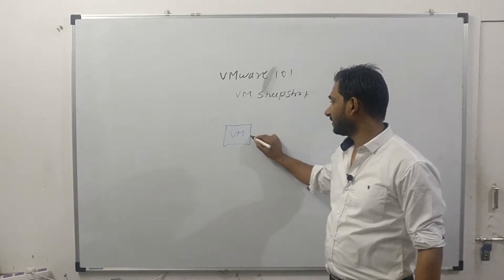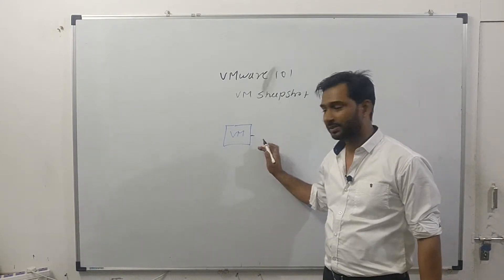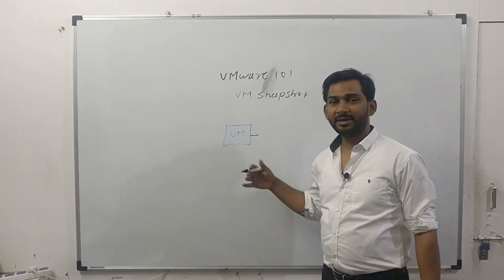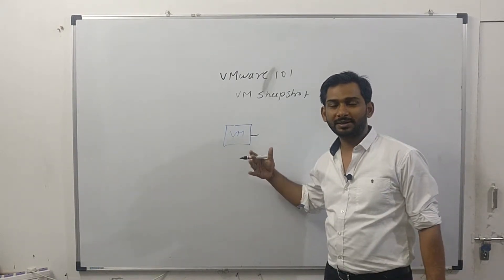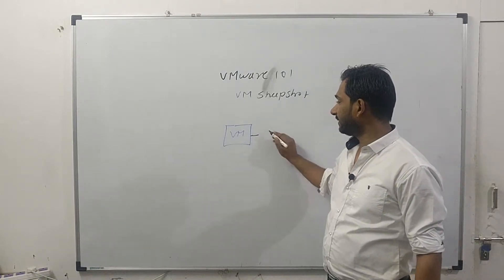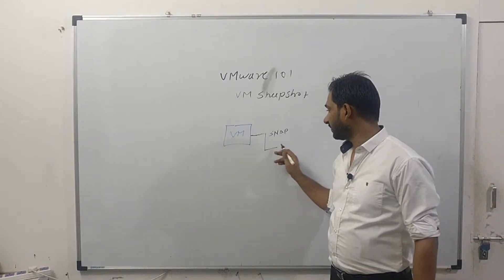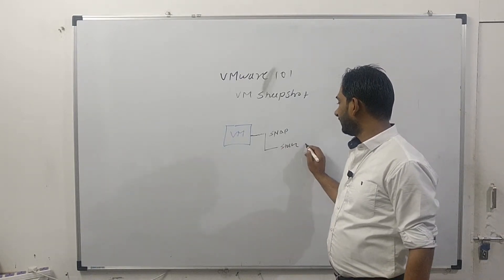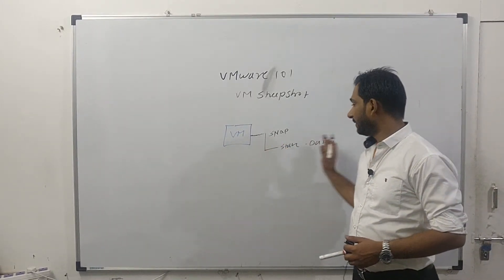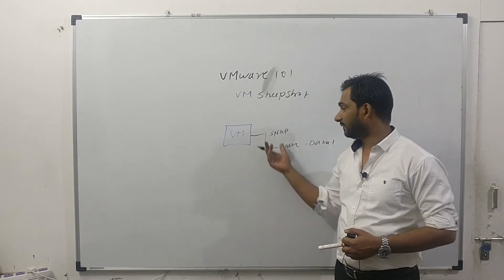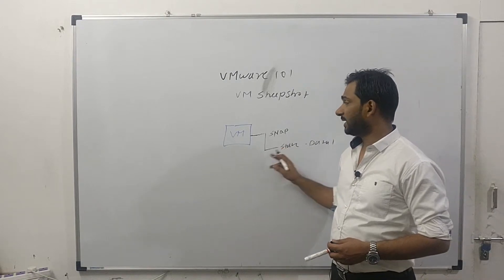Let's say this is my virtual machine used for a daily development purpose — for database-related work. I have a requirement that every day I need to start with a fresh database. So I install the virtual machine, install a database application like Microsoft SQL Server, and create Snapshot 1. After that, I start working on the virtual machine — this is State 1 — where I create Database 1.